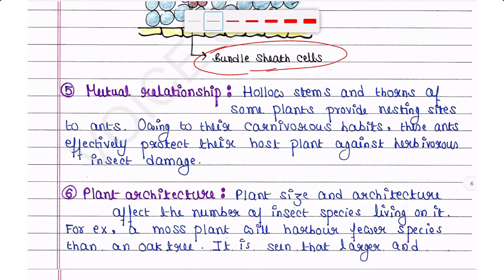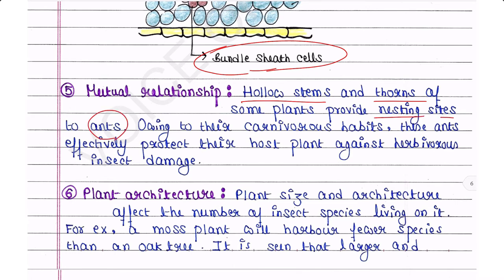Mutual relationship: hollow stems and thorns of some plants provide nesting sites to ants. These ants, owing to their carnivorous habits, effectively protect their host plant against herbivorous insect damage — this is basically a mutual relationship between ants and plants.